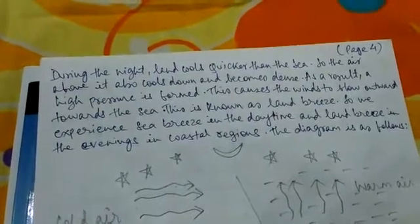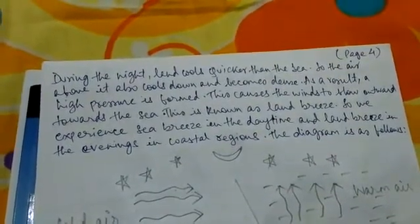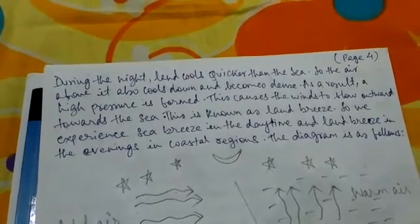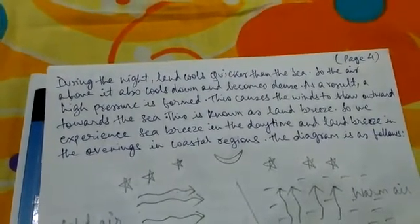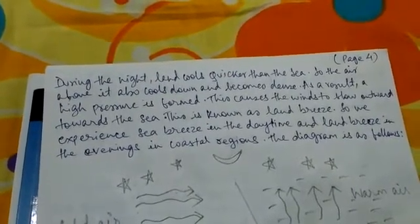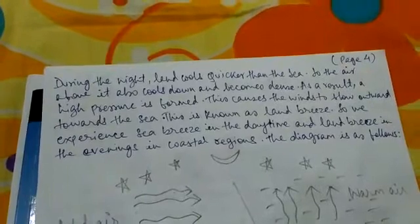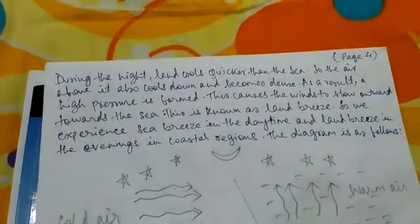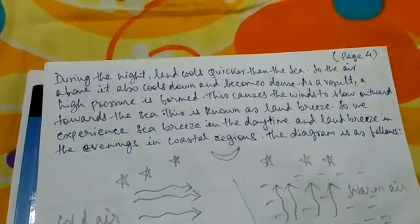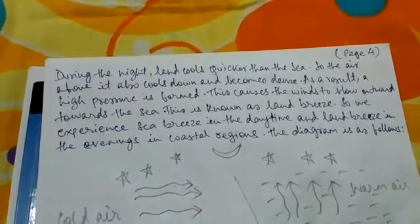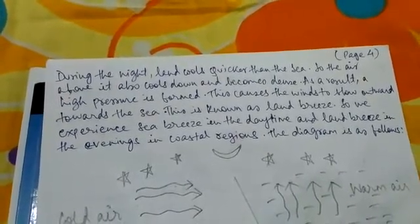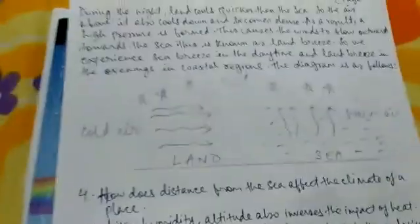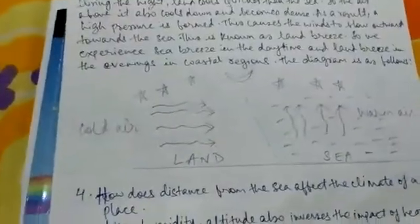During the night, land cools quicker than the sea, so the air above it also cools down and becomes dense. As a result, a high pressure is formed, causing the winds to blow outward towards the sea. This is known as land breeze. So we experience sea breeze in the daytime and land breeze in the evenings in coastal regions. The diagram is shown here — please see it.